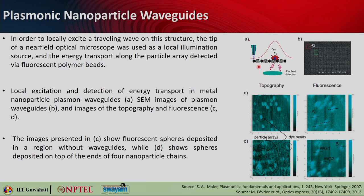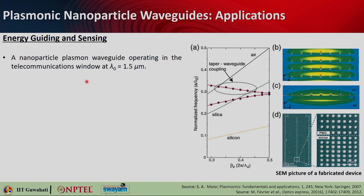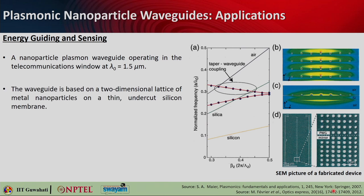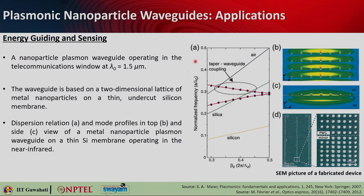Energy guiding and sensing on plasmonic waveguides can also operate at the telecom window of 1550 nm. This waveguide is based on a two-dimensional lattice of metallic nanoparticles on a thin undercut silicon membrane, and the SEM image of a fabricated device shows the structure. The dispersion relation and mode profile from top and side views are derived for this periodic arrangement — essentially a plasmon waveguide on a thin silicon membrane operating in the near-infrared window.